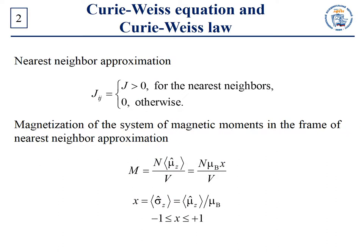In particular, we assume J_ij is equal to a constant for the nearest neighbors and J_ij is equal to zero for other atomic pairs. The magnetization of such a system, projected on the z-axis, has the following form, where x denotes the averaged σ_z operator. The parameter x does not depend on i; x lies between minus one and plus one, and x is equal to zero in the case where μ_z is equal to zero.